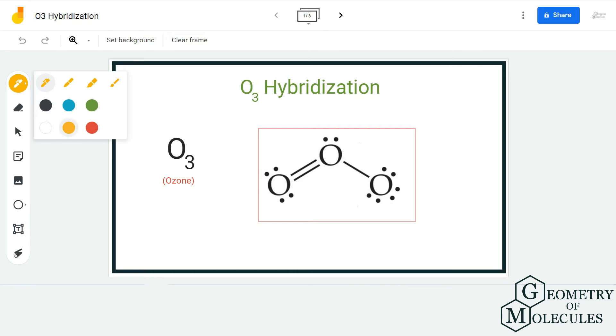help us find out the hybridization in under two minutes. So for the steric number, for knowing the steric number, we need to know the number of sigma bonds that the central atom is forming and the number of lone